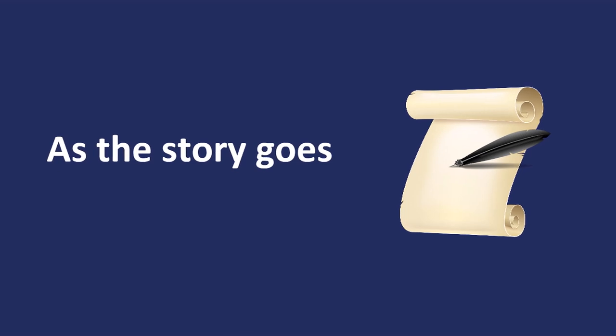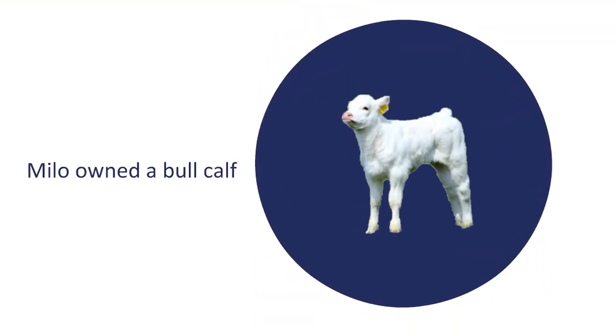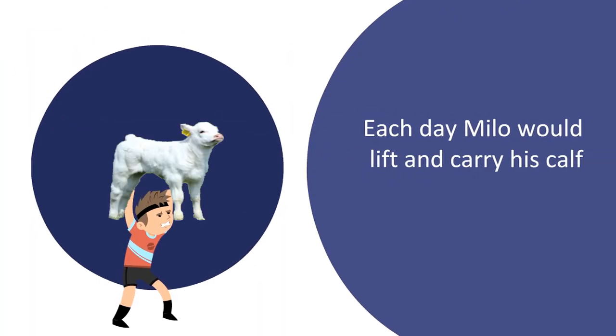As the story goes, Milo owned a bull calf. Each day, Milo would lift and carry his calf.